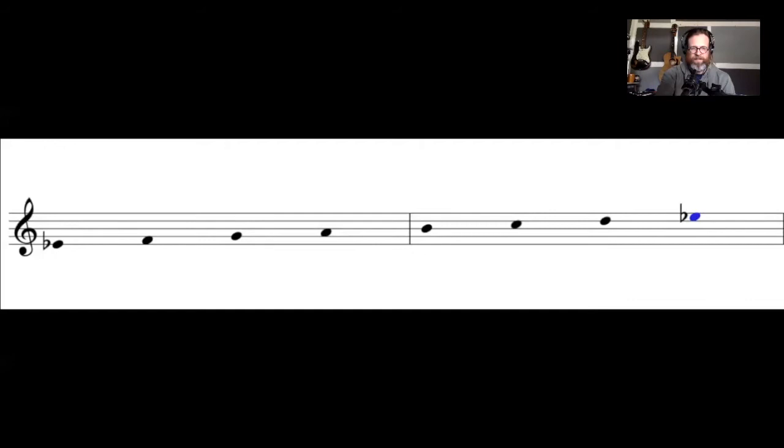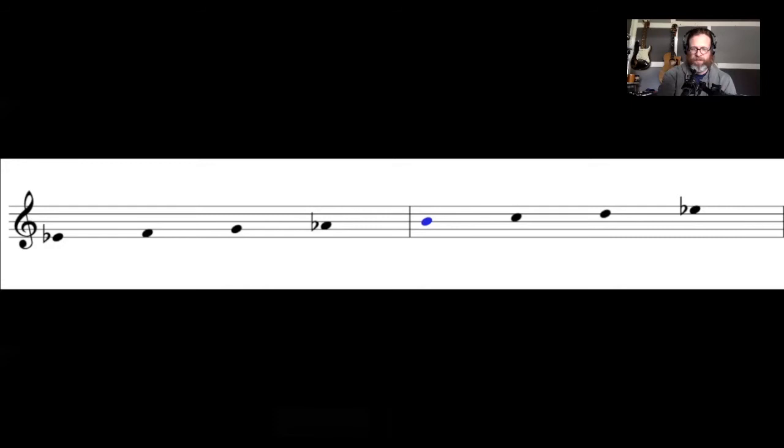So from E-flat to F is a whole step, which is scale degree one to two. F to G is a second whole step, which is scale degree two to three. But now between G and A we have a whole step, which, if you recall, between scale degrees three and four we need a half step, so here we lower the A half step to an A-flat. Now our next step should be a whole step, but A-flat to B natural is three half steps, so we just have to lower that B natural to a B-flat to get that whole step.